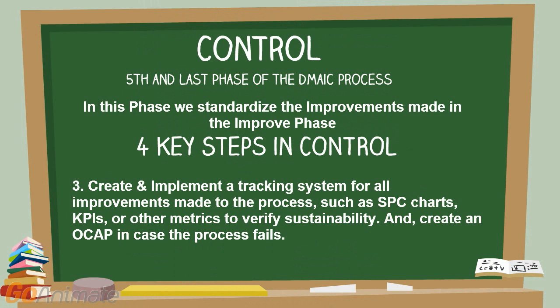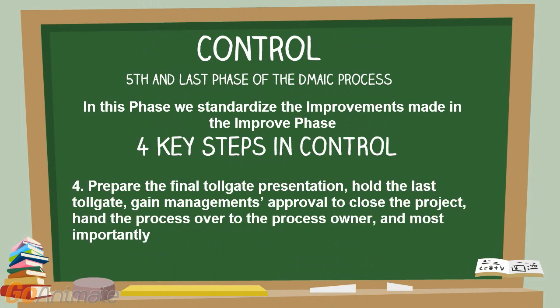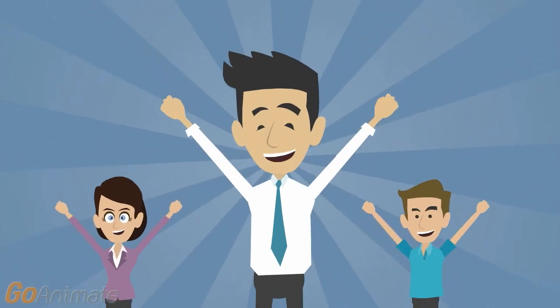Fourth, create an OCAP — Out of Control Action Plan — in case the process fails. It is a flowchart of what actions to take if the process fails. Oftentimes, if the new process is unsustainable the team will reconvene. Fifth, prepare the final tollgate presentation, hold the last tollgate, gain management's approval to close the project, and hand the process over to the process owner.